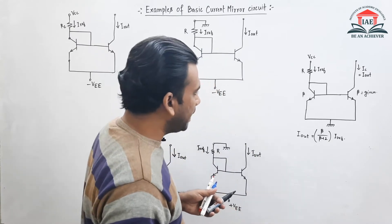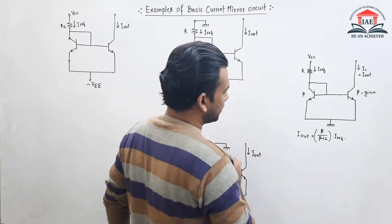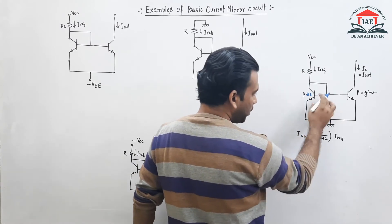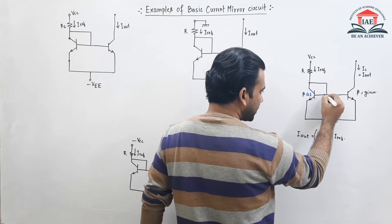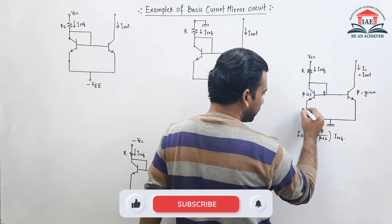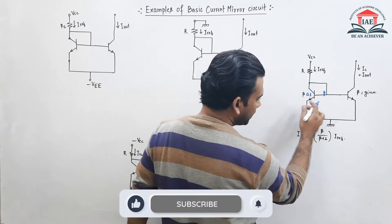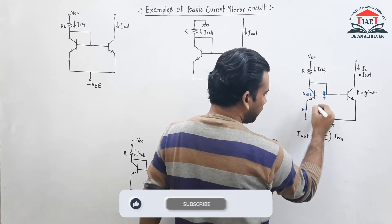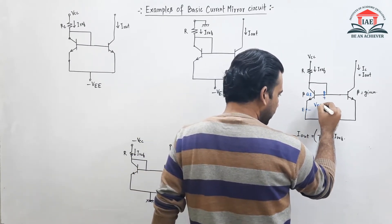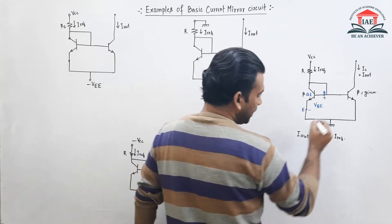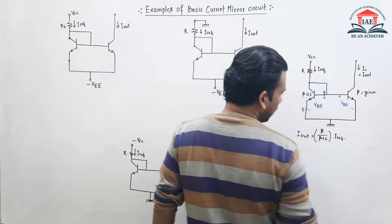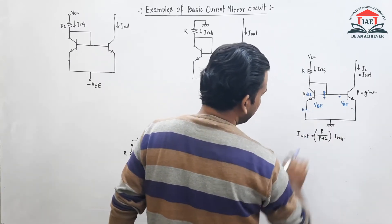To find I reference, let us denote some voltages. For transistor Q1, this is the base and this is the emitter. It is an NPN transistor, so the base will be positive with respect to the emitter. That means this potential is VBE. Similarly, in the current mirror, this potential is also VBE.